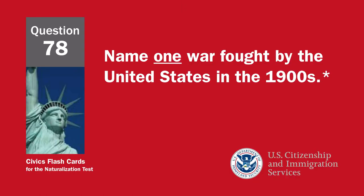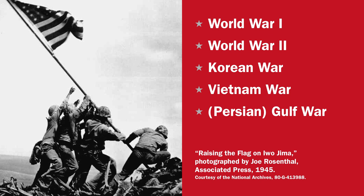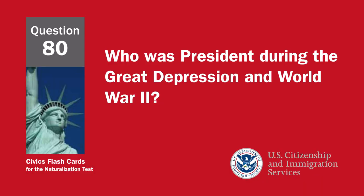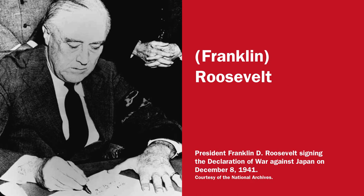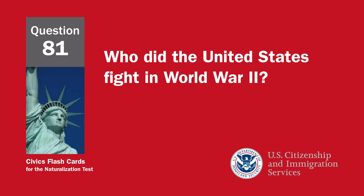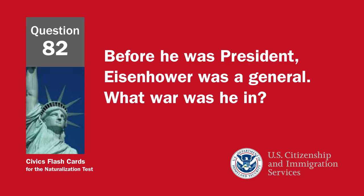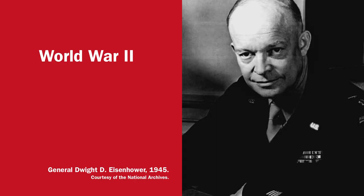Name one war fought by the United States in the 1900s: World War I, World War II, Korean War, Vietnam War, or Persian Gulf War. Who was president during World War I? Woodrow Wilson. Who was president during the Great Depression and World War II? Franklin Roosevelt. Who did the United States fight in World War II? Japan, Germany, and Italy. Before he was president, Eisenhower was a general — what war was he in? World War II.